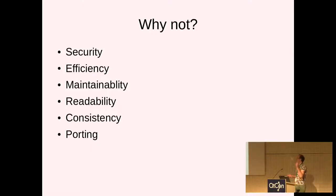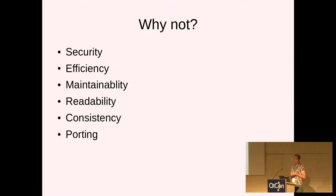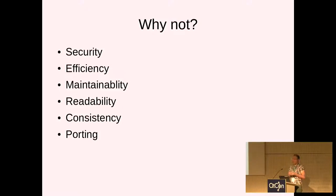But why shouldn't you do it? First of all, there's security, and we'll see an example of how security is problematic when you write your own IO code. Efficiency can be higher if you do not write your own IO code — and it may sound counterintuitive, but I think it's true. The code will be more maintainable, more readable, more consistent, and on top of that, porting will be easier if you do not write your own IO code.